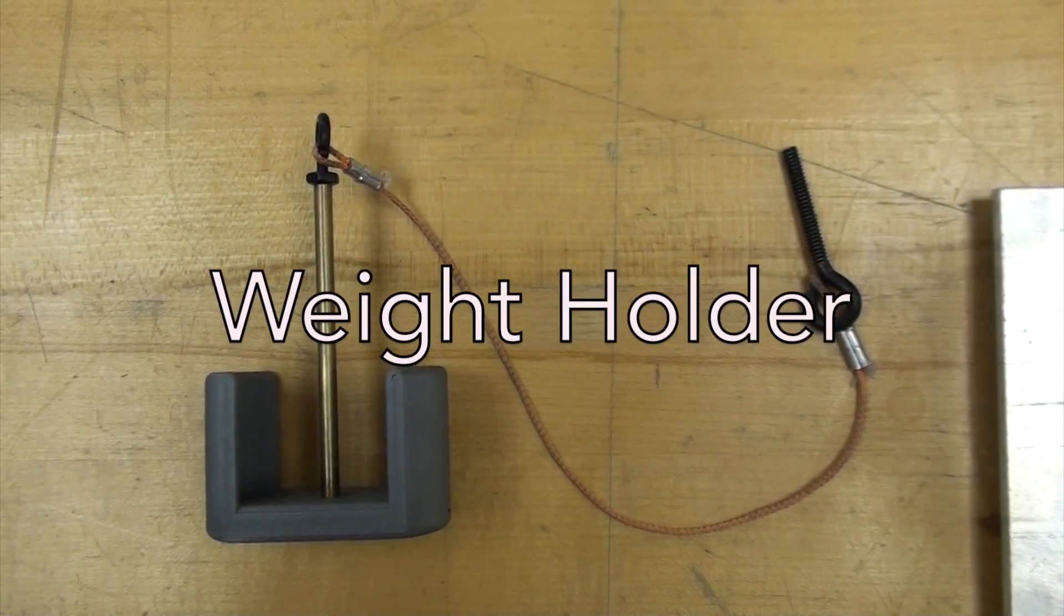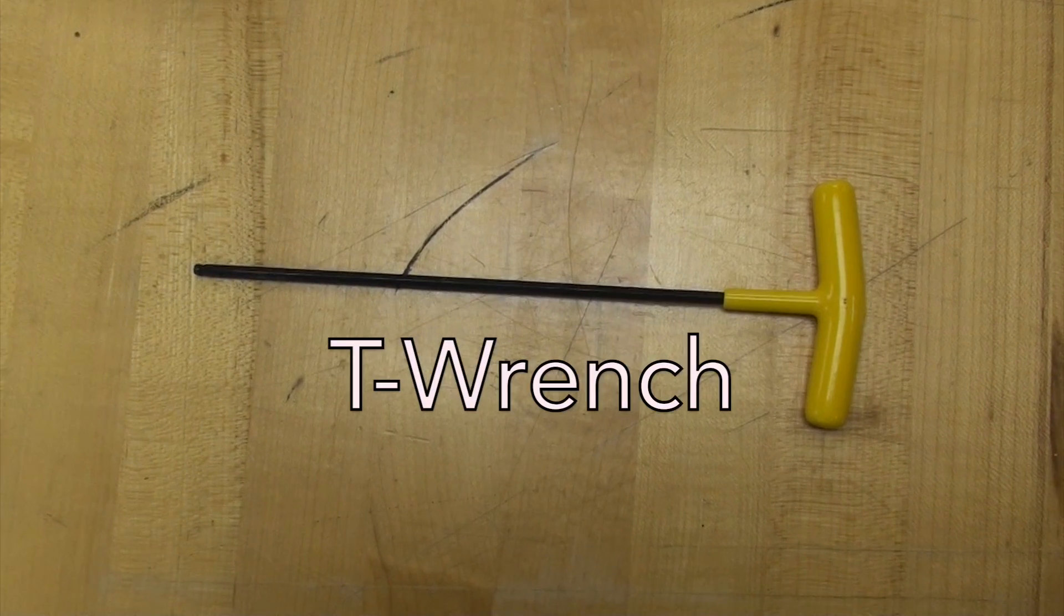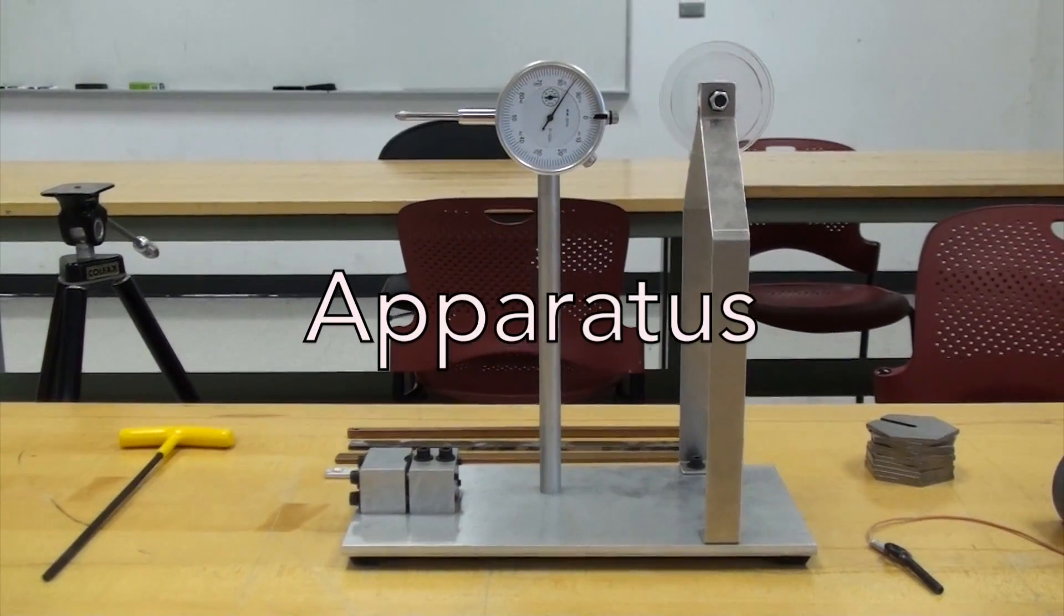To do this lab you'll need a series of instruments including weights, a weight holder, four beams, a t-wrench, and a beam bending apparatus.